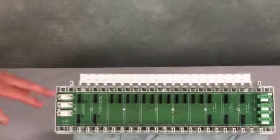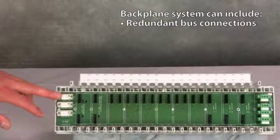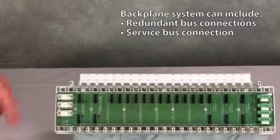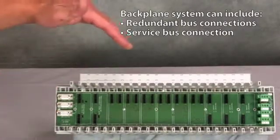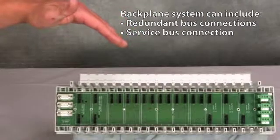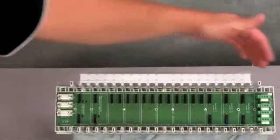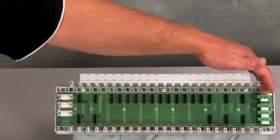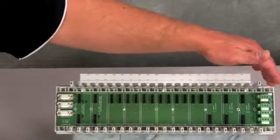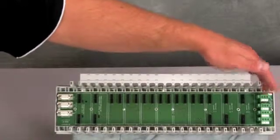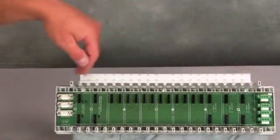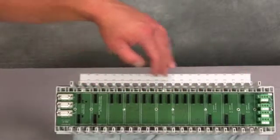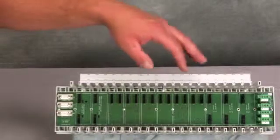The backplane contains redundant bus connections for the digital bus as well as a service bus connection which gives you access to diagnostic information from the different gateways and I.O. modules that are plugged into the backplane. And then on the other side you have your power bulk 24 volt connections as well as some additional power boost for digital outputs. And you can see here that you have different terminals along with guide rails for your different I.O. modules and power supply and gateway.